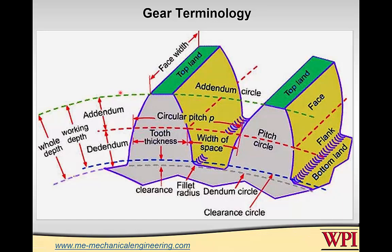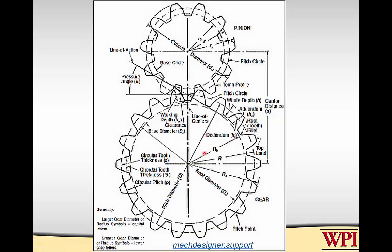The important circles on a gear: when you talk about gear diameter, you're almost always talking about the pitch diameter — here's the pitch circle. There are three other circles: the addendum circle through the top land, the dedendum circle through the bottom land, and the base circle. The base circle is used to create the gear profile — this is an involute curve — so that as gears roll on each other, you maintain a constant speed ratio. That's why you use an involute curve: to get what's called conjugate action.